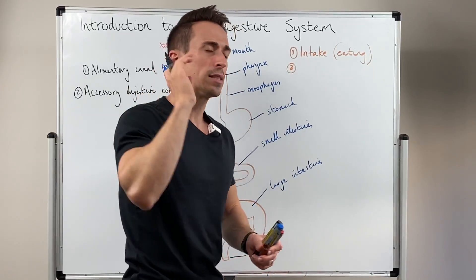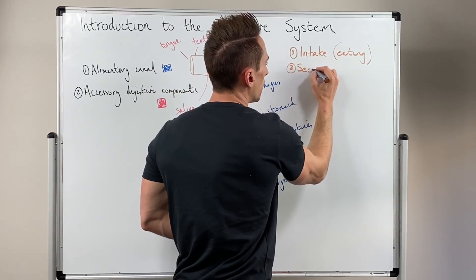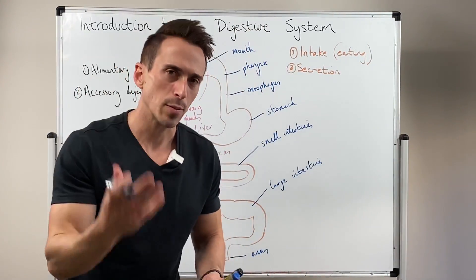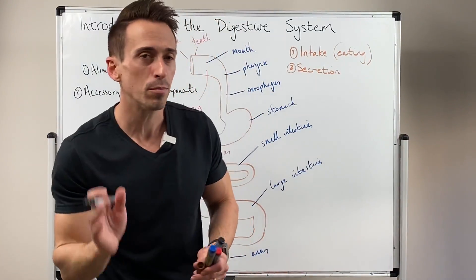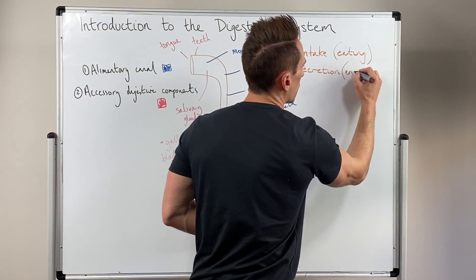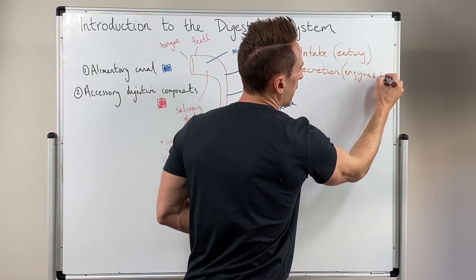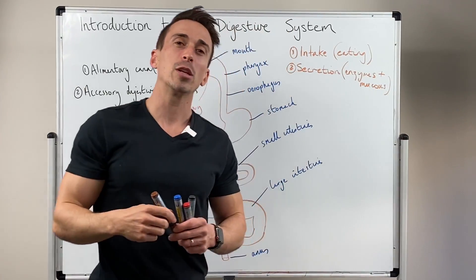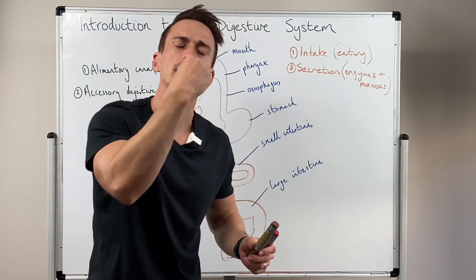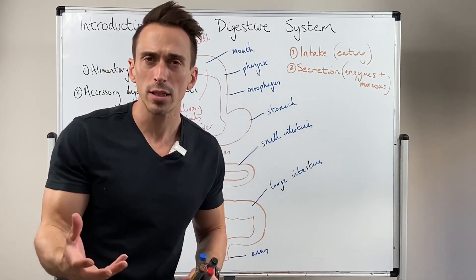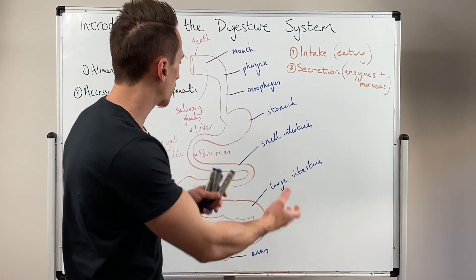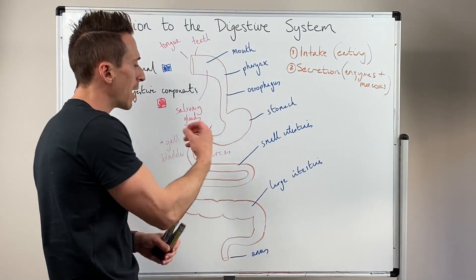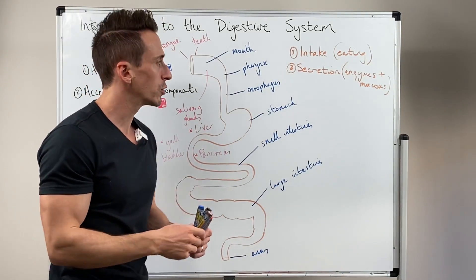The second function we need to talk about is that of secretion. The digestive system actually secretes substances, and these substances are enzymes and mucus. These enzymes can be digestive enzymes, for example things that break down proteins, fats, or carbohydrates. And the mucus is obviously extremely important because we're going to have substances moving through this alimentary canal — there's going to be friction in this environment and we don't want to damage the cells of that tissue.